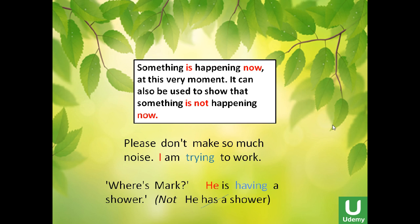One meaning of the present continuous: something is happening now, at this very moment. It can also be used to show that something is not happening now. For example: Please don't make so much noise, I am trying to work — meaning I am trying to work right now. Where is Mark? He is having a shower. Some students say he has a shower, which is wrong, because he is in the shower right now. So, he is having a shower.